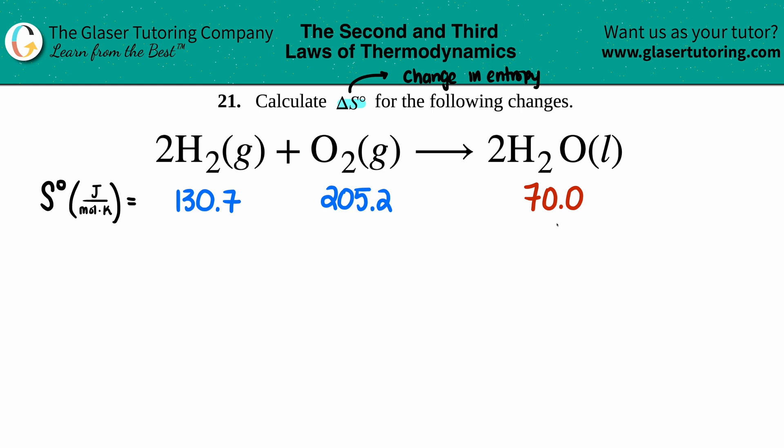Now if we had to estimate if our change in entropy is going to be positive or negative, it seems that we're going from states that are very high—that have high entropy values. Gases are all over the place, so I have a lot of randomness.